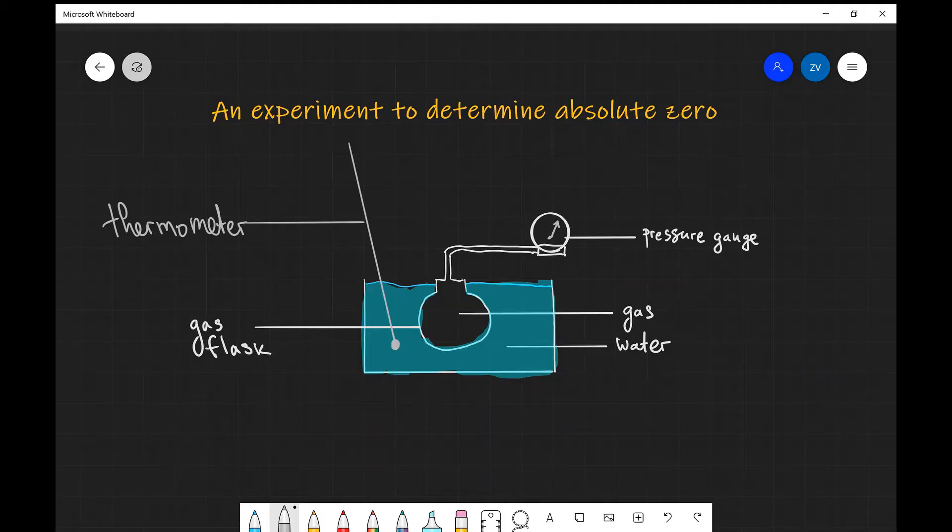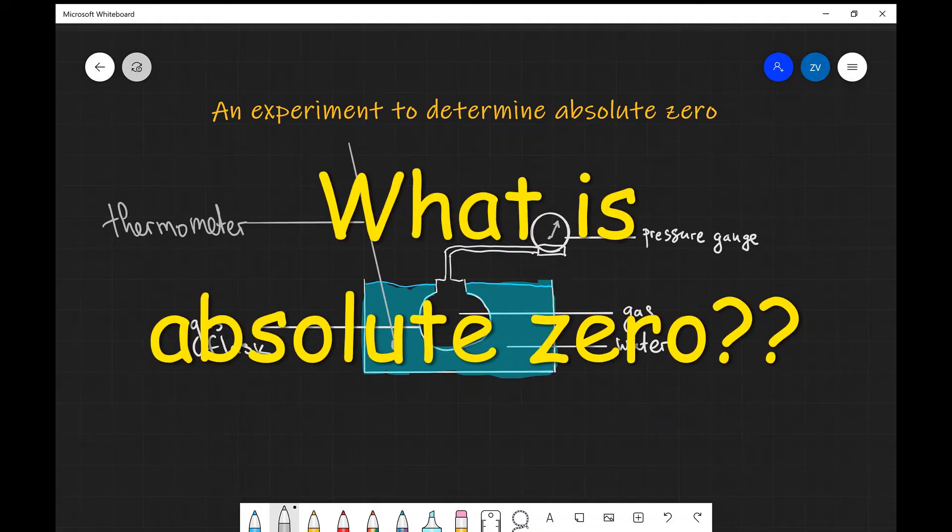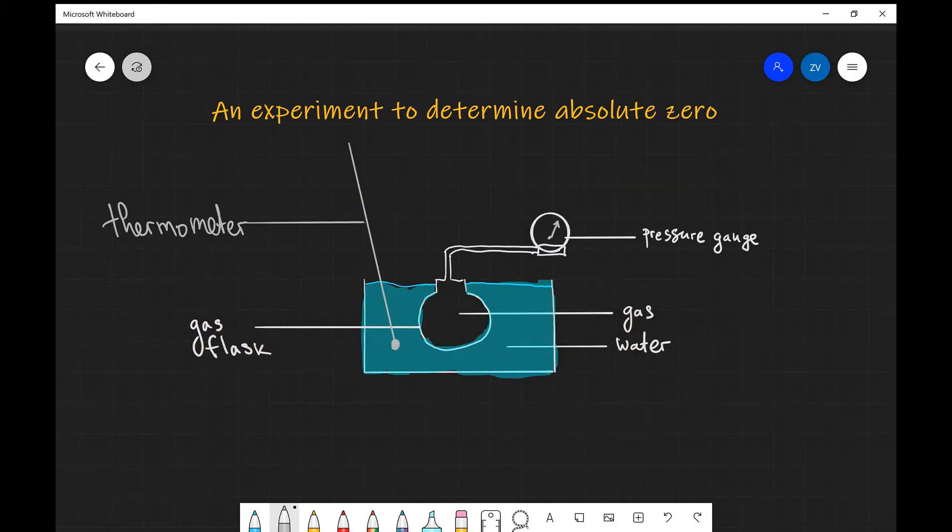Hello everyone, welcome back to ASFC Physics. What we're going to be looking at today is an experiment to determine absolute zero. So here's our experimental setup which we're going to be using. We have a water bath